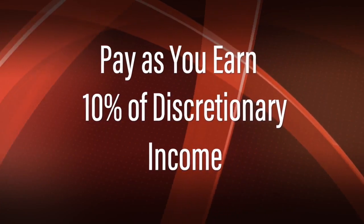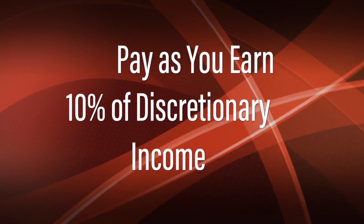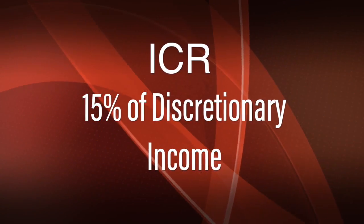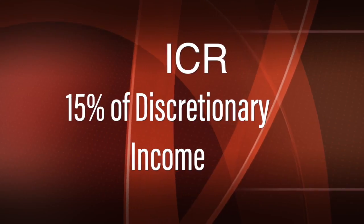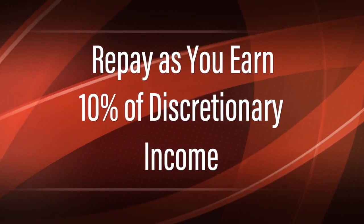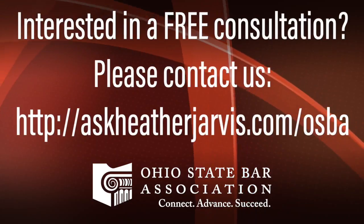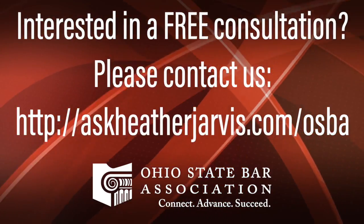Pay-as-you-earn sets payments at 10% of discretionary income, whereas income-based repayment sets it higher at 15%, and REPAYE also sets it at 10% of discretionary income. Forgiveness happens in as early as 20 years under pay-as-you-earn, and 25 years under the other plans, and they're all eligible for public service loan forgiveness. Mind the details and get more information to choose between the various income-driven plans available to you. For more information and a consultation, contact us.